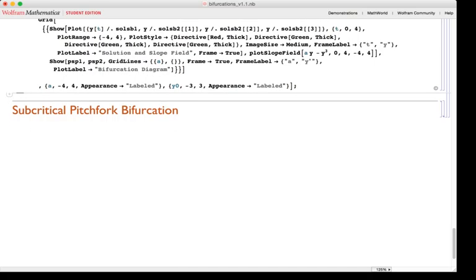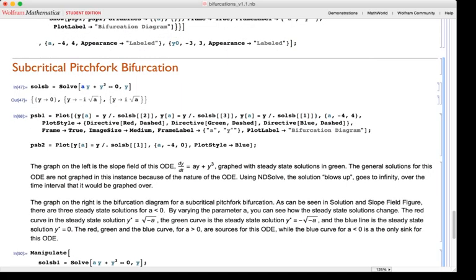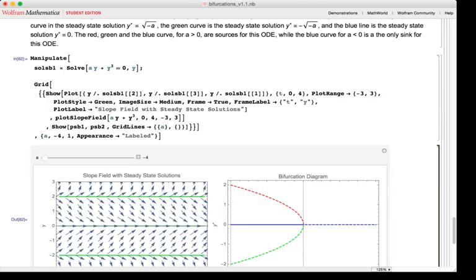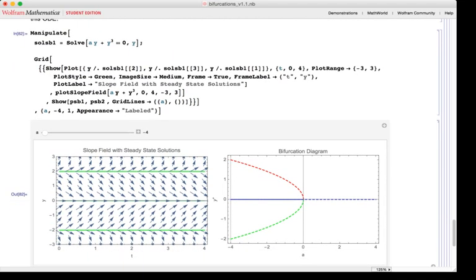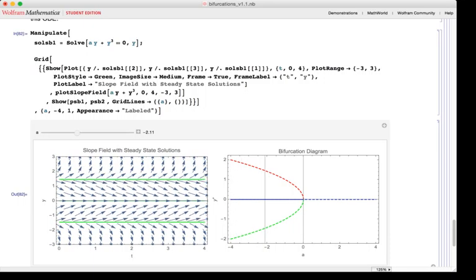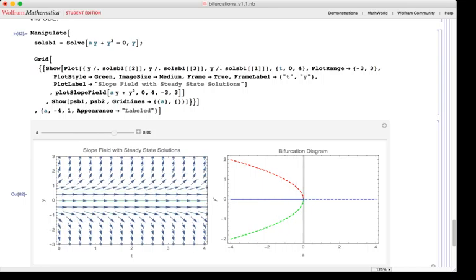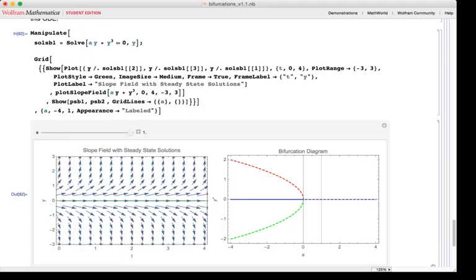The last bifurcation that we shall observe in this notebook is the subcritical pitchfork bifurcation. This bifurcation is simply the reverse of the supercritical pitchfork bifurcation. Then, as you modify the parameter a, you can see solutions decreasing to 0 and eventually becoming 0 when the parameter a is greater than 0.